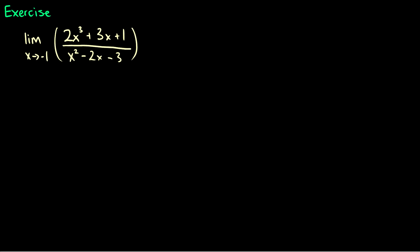One more. The limit as x goes to negative 1 of 2x cubed plus 3x plus 1 over x squared minus 2x minus 3. We definitely have to factor these. So let's begin by factoring the top and the bottom — and this is going to be fun to factor. So 2x cubed plus 3x plus 1.